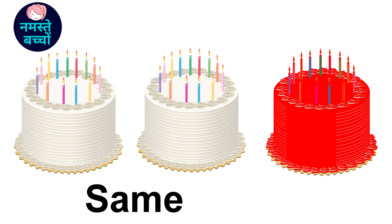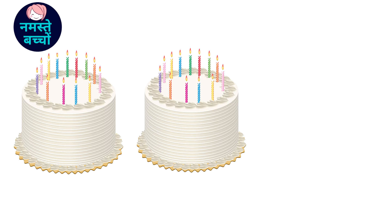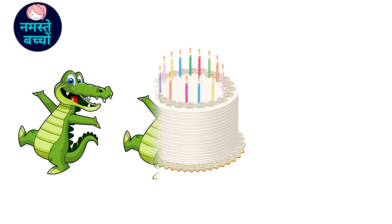Now look at another cake — its color is red, so we can say it is different because it is the same in size but different in color.